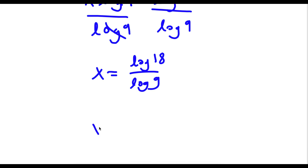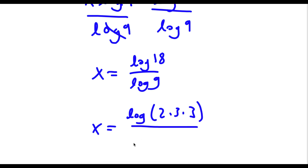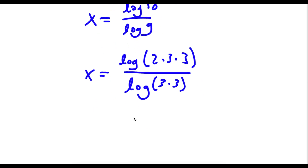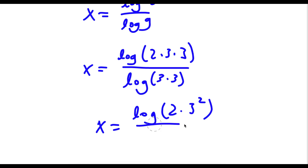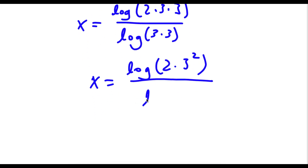Now log 18 is the same thing as log of 2 times 3 times 3. Log 9 is the same thing as log of 3 times 3, which is log 3 squared.